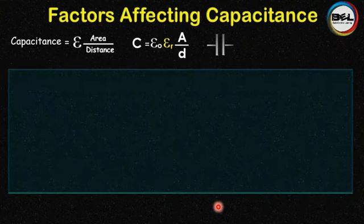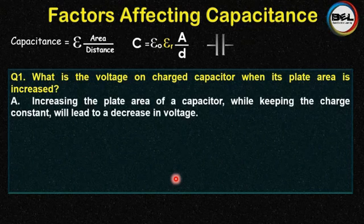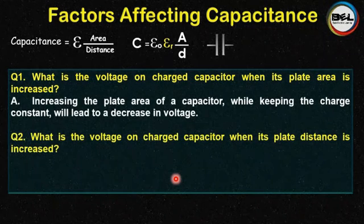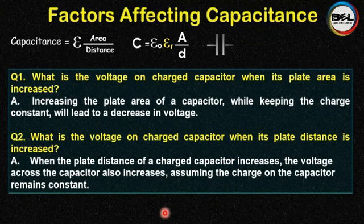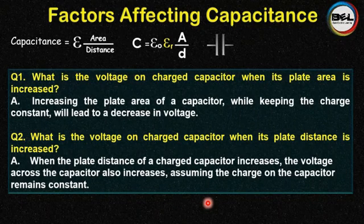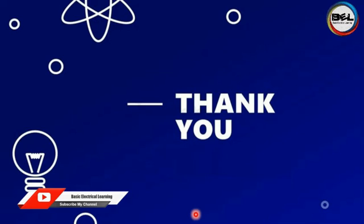There are some important things relating to the factors affecting capacitance. When the plate area of a charged capacitor is increased, the voltage on the plates decreases. When the plate distance of a charged capacitor increases, the voltage across the capacitor also increases, assuming the charge remains constant. So increasing the area decreases voltage and allows more charge to be stored, and decreasing the distance also decreases voltage on the charged capacitor so more charge can be stored. That was all about the factors affecting capacitance. If this video is helpful, please like the video and subscribe to the channel. Thank you very much.